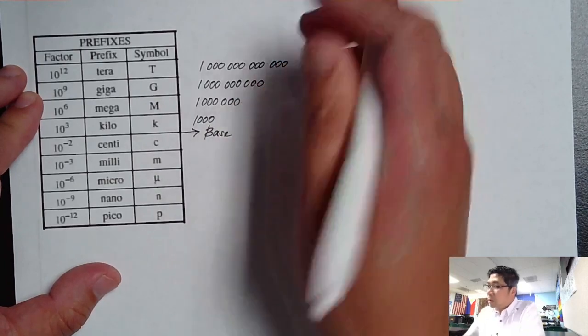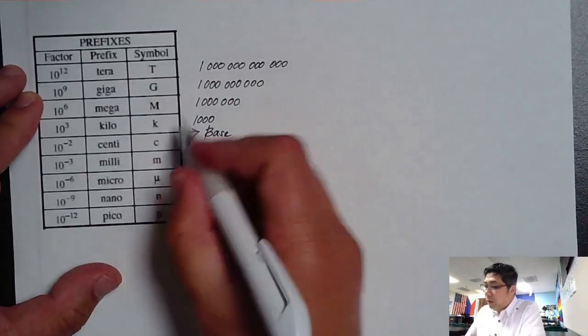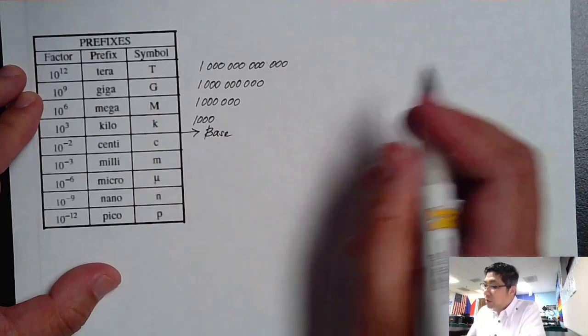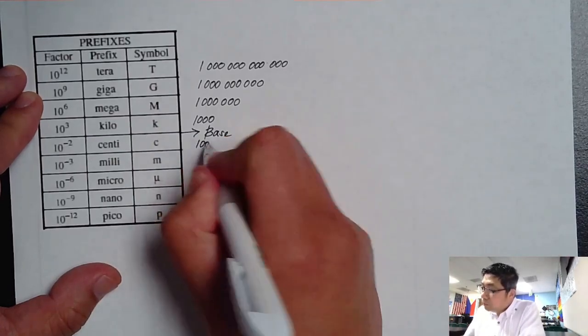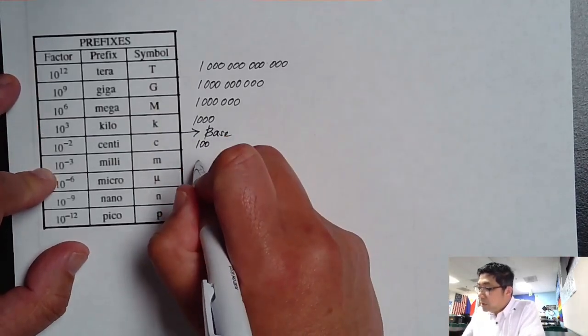So there's 12 zeros. Here on the bottom part, Centi, meaning there should be a hundred. We have Milli, which is a thousand.